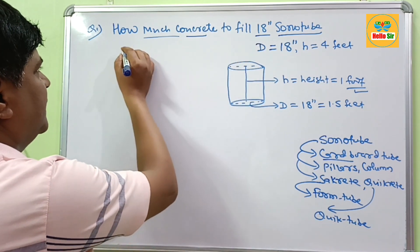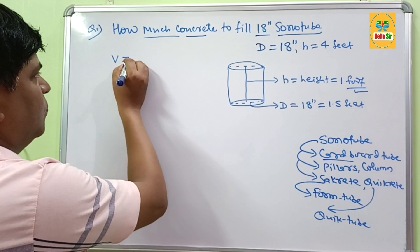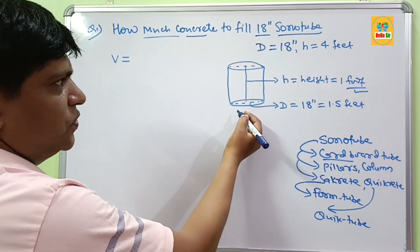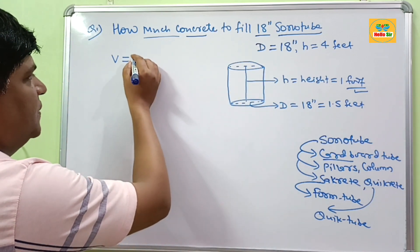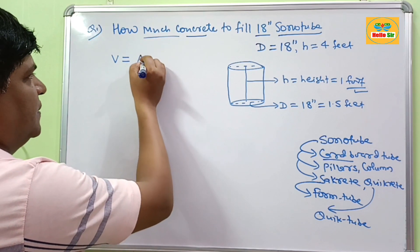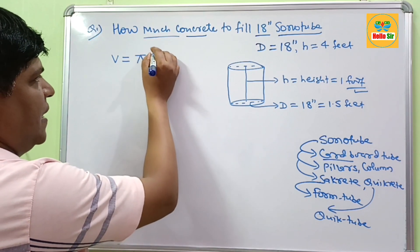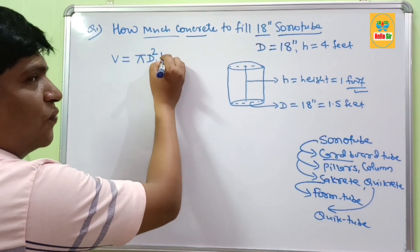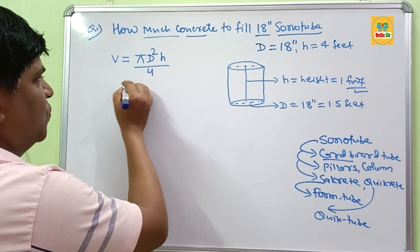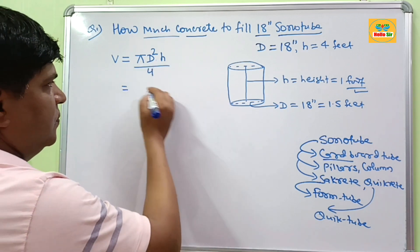The required amount of concrete is equal to volume of these sonotubes. And the volume of these cylindrical shaped sonotubes is calculated by using formula π D² h divided by 4. Put all the values.